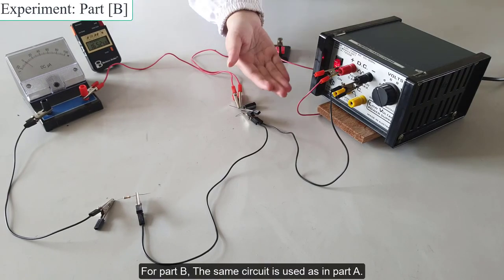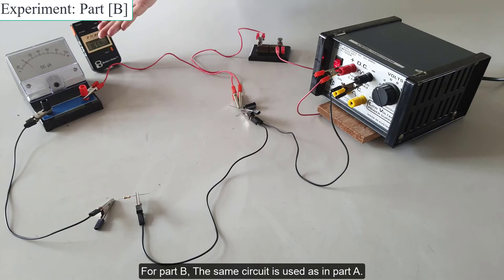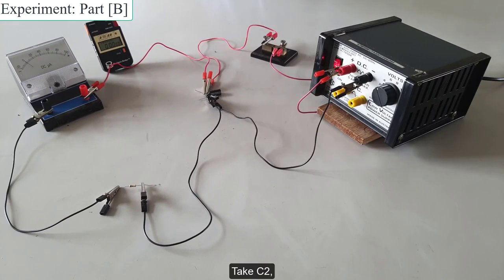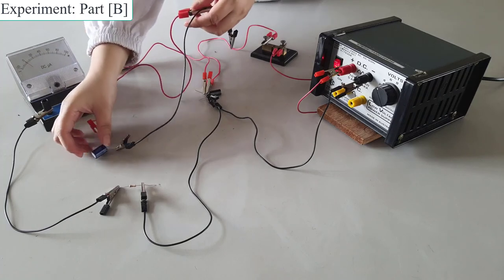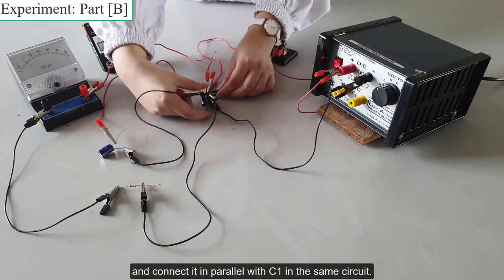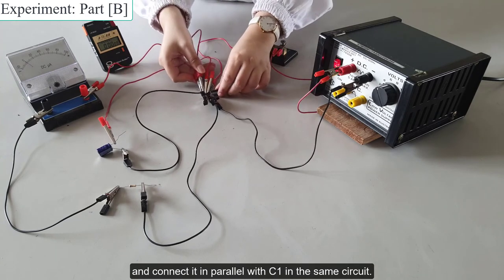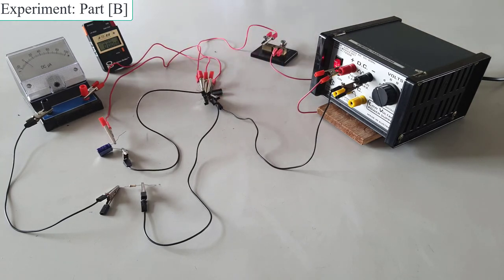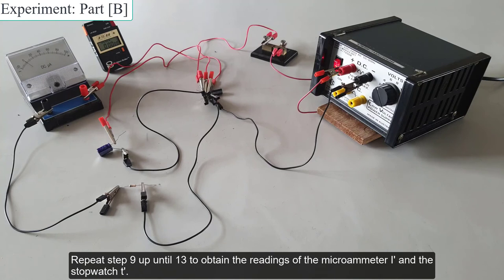For part B, the same circuit is used as in part A. Take C2 and connect it in parallel with C1 in the same circuit. Repeat step 9 up until 13 to obtain the readings of the microammeter I prime and the stopwatch T prime.